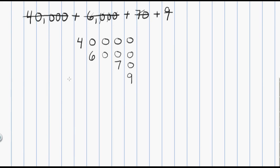So what do I have here? I have an addition problem. We'll put our addition sign and the bar. Now let's work right to left. Right column: 0, 0, 0, and 9 — adds up to 9. Next column: 0, 0, and 7 — adds up to 7. Next: 0 and 0 is 0. Then 0 and 6 is 6. And here I have a 4 with nothing to add to it, so I just bring that 4 down.